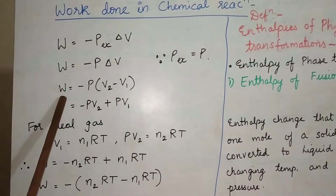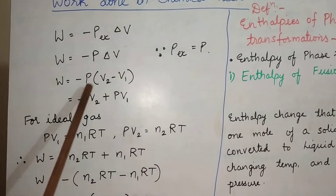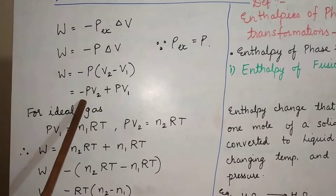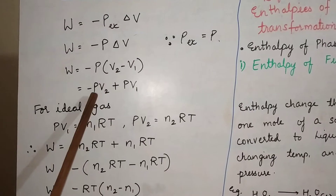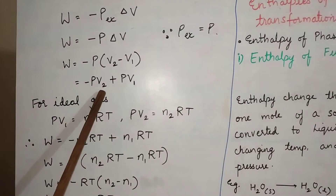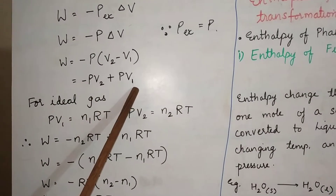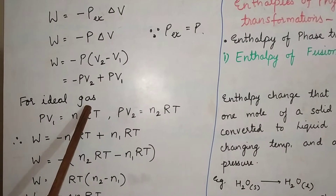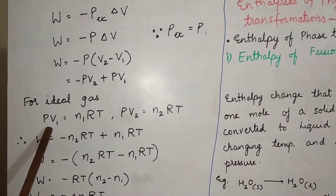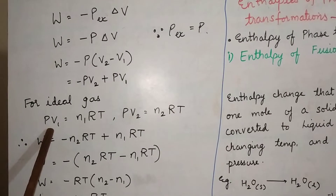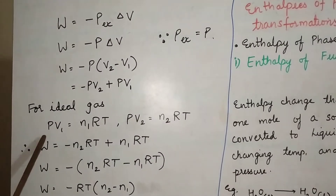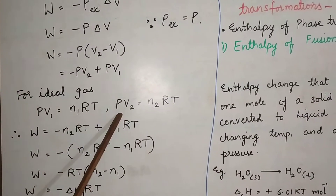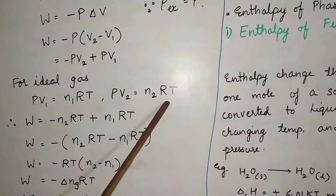This becomes W is equal to minus P, and delta V can be written as V2 minus V1. When you open up the brackets you get minus P·V2 plus P·V1. For an ideal gas I can use the ideal gas equation: P·V1 is equal to N1RT and P·V2 is equal to N2RT.